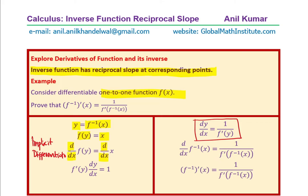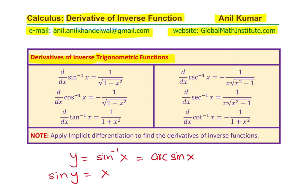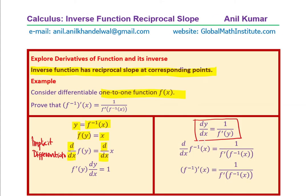This concept helps us find derivatives of trigonometric functions directly without going through all the steps. If you understand this concept, it is essentially a one-step solution to prove all the derivatives we showed at the beginning. Basically, since y is f inverse of x, the derivative of f inverse of x is the reciprocal of the derivative of f at the point f inverse of x. That is how they are related.